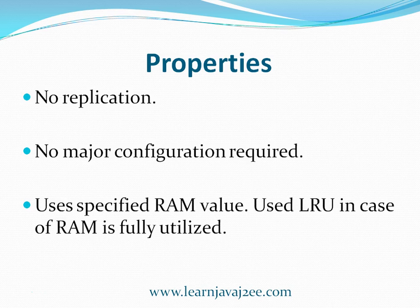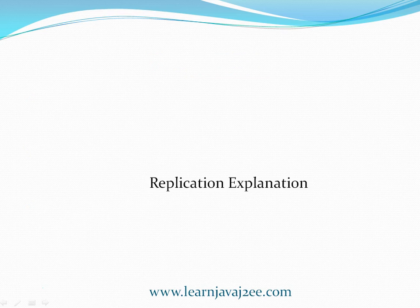The Memcached server uses RAM — Random Access Memory — and it uses the LRU (Least Recently Used) mechanism to evict older data. If data has not been used for a long time, the LRU mechanism is used to remove that older data from memory.